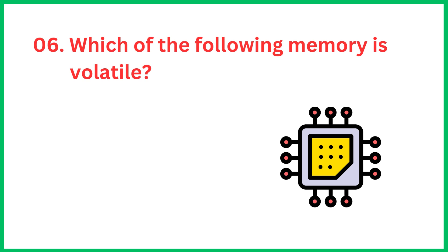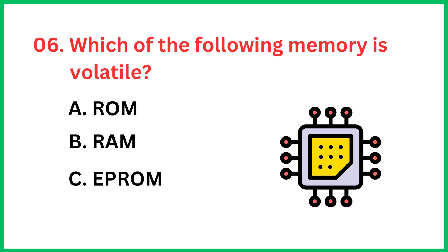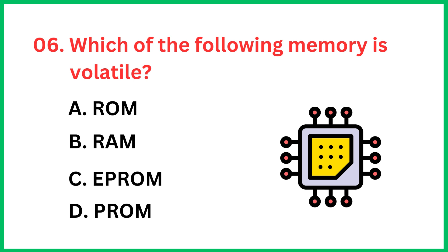Which of the following memory is volatile? The correct answer is option B, RAM.